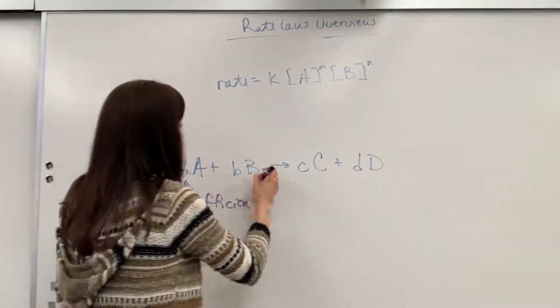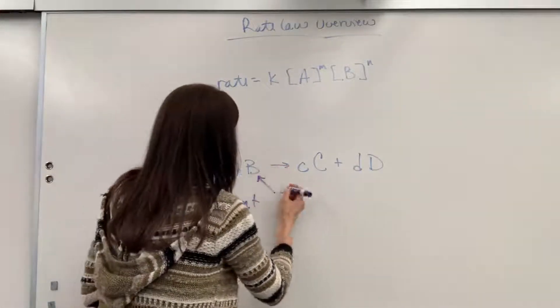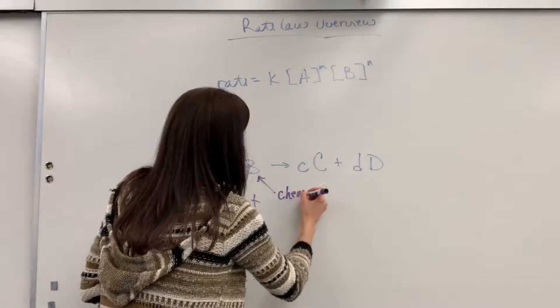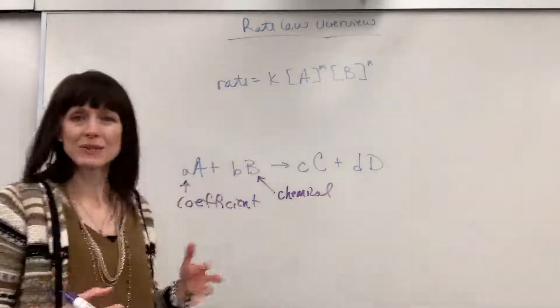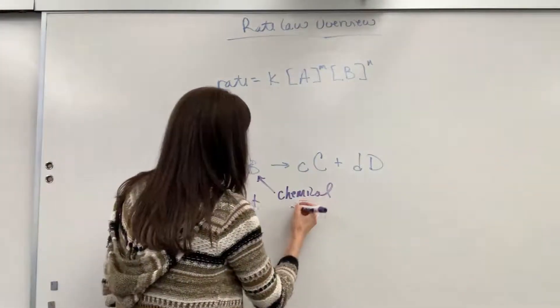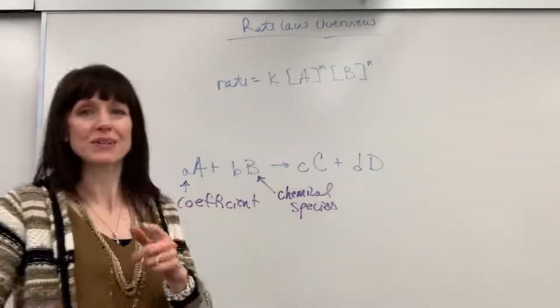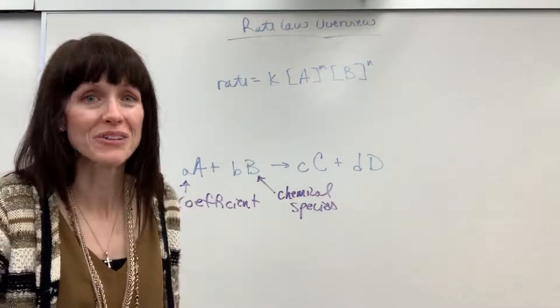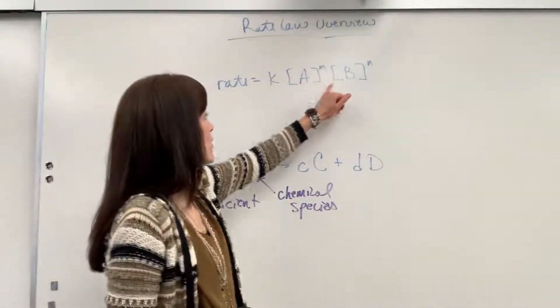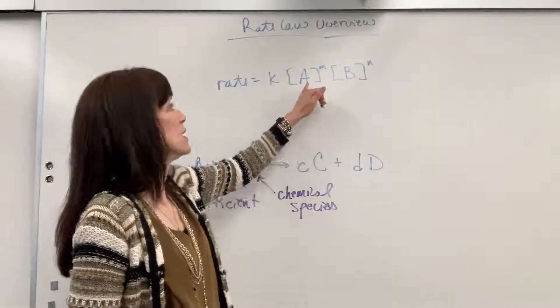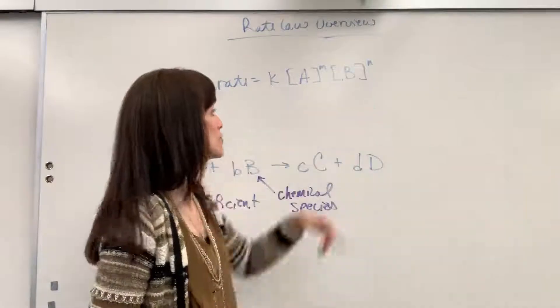The capital letters, those represent our chemical species. So they're either going to be our elements or our compounds, chemical species. So really important in rate law, what I want you to notice is that yes, we have our chemical species. That's going to be concentration of A, concentration of B.